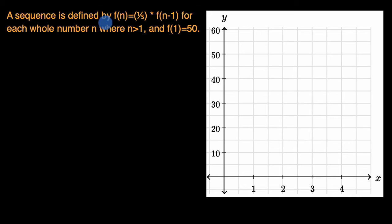We're told a sequence is defined by f(n) equals one-fifth times f(n-1) for each whole number n, where n is greater than one. So each term, whatever the value of the sequence is for that term, it's one-fifth times the previous term. And then they also tell us what the first term is: f(1) is equal to 50.